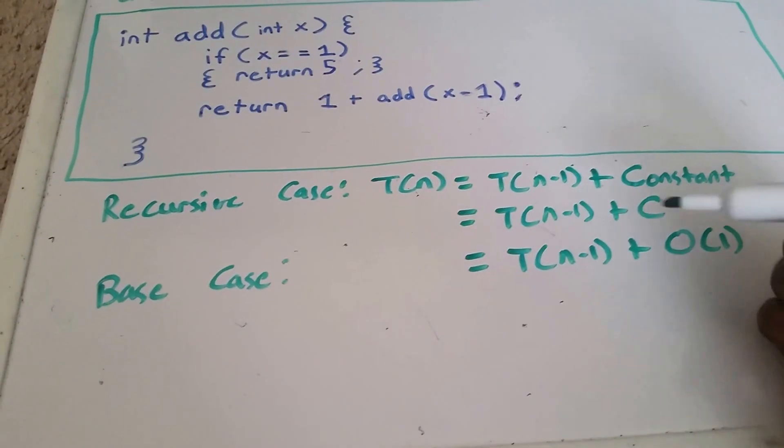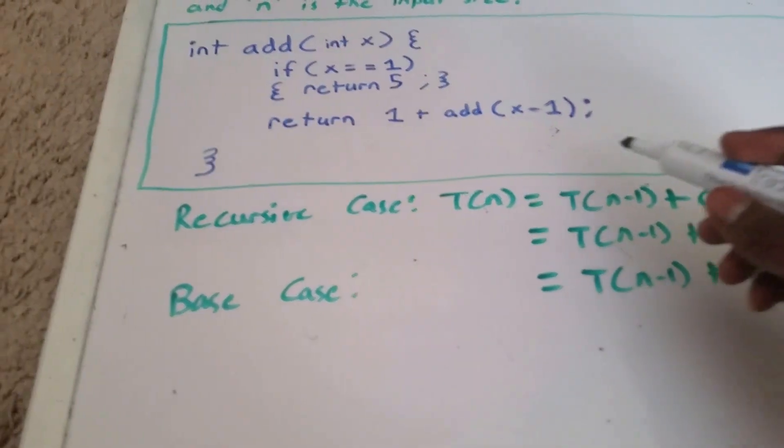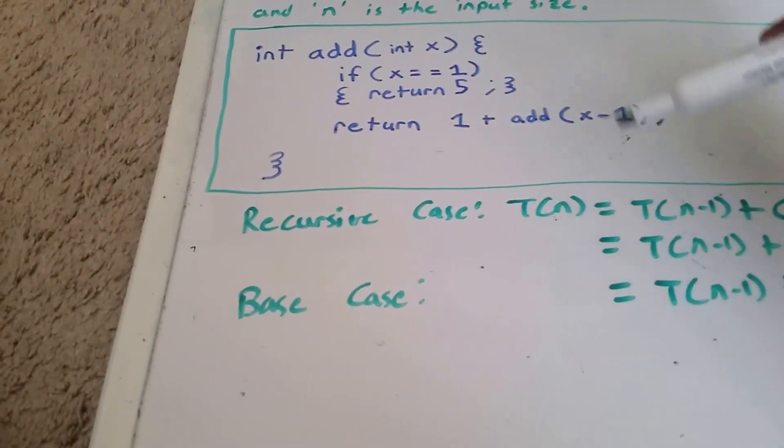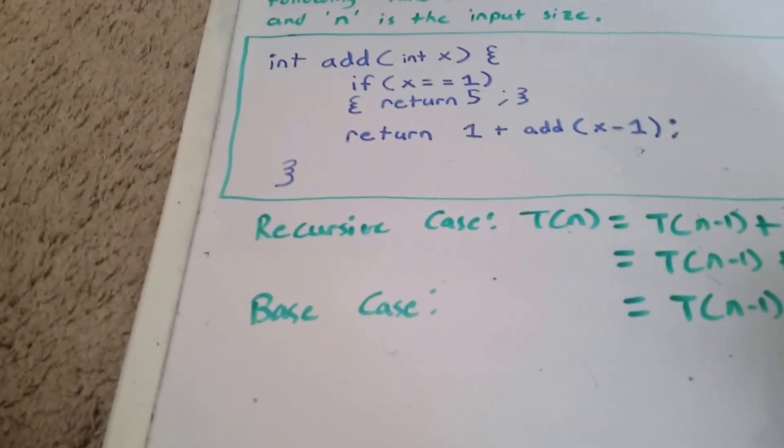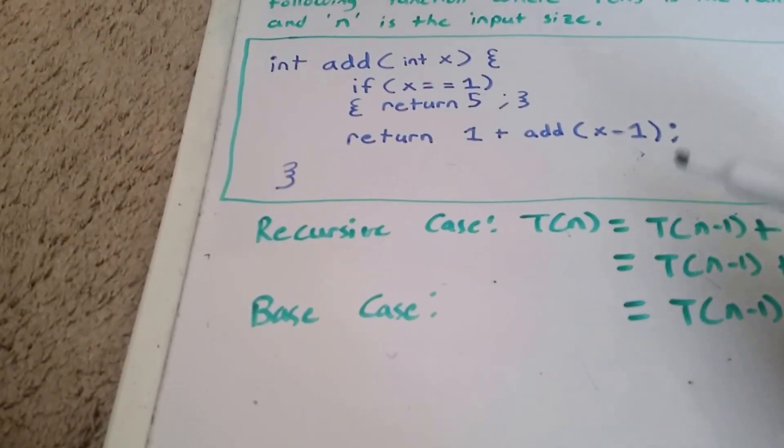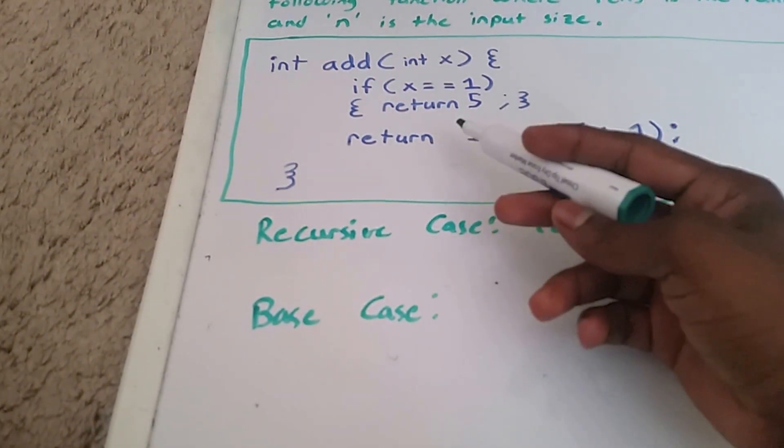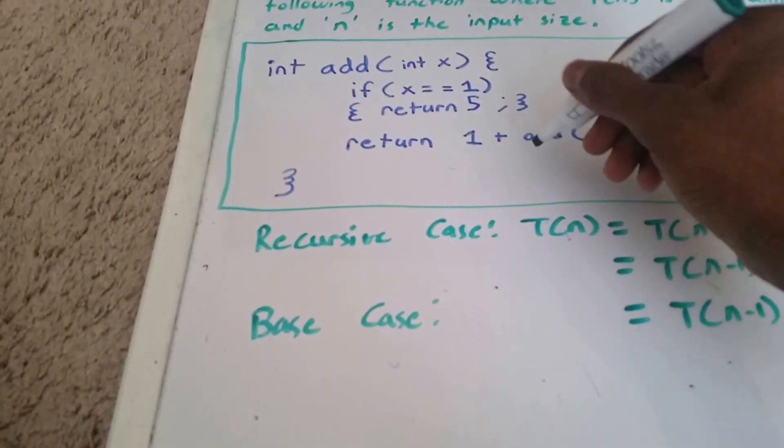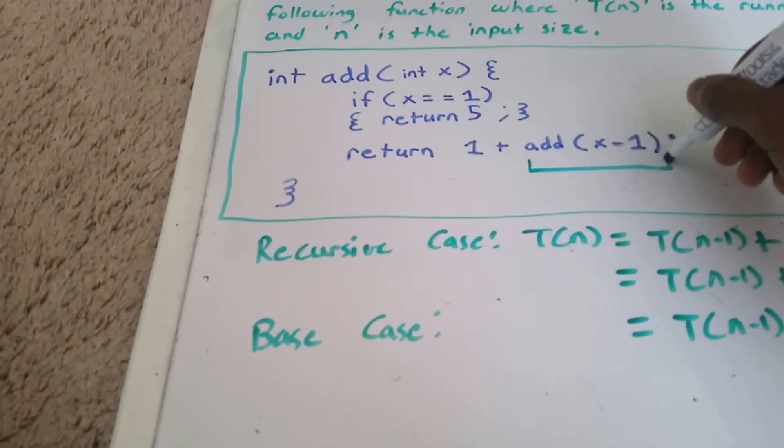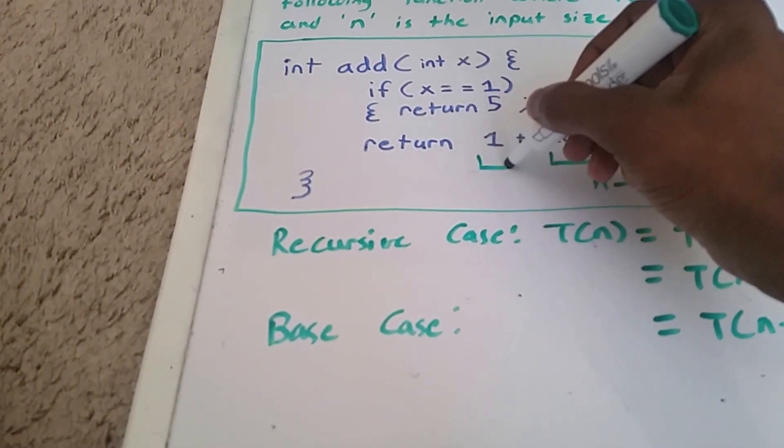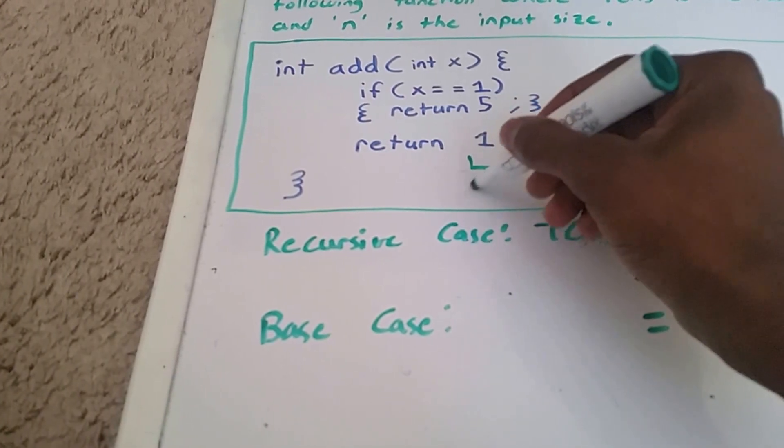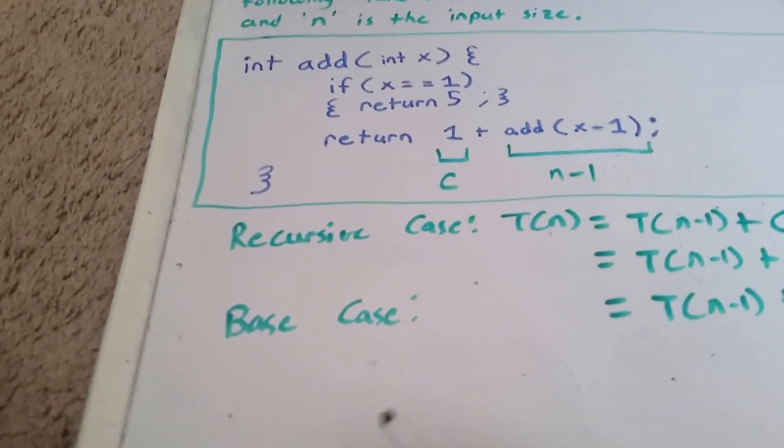Okay, so how do I get to this? Well, we know that because our recursive call has input of size n minus 1, and the extra work we do is constant. So right here we have input size n minus 1, and here we have some constant work that will be done.